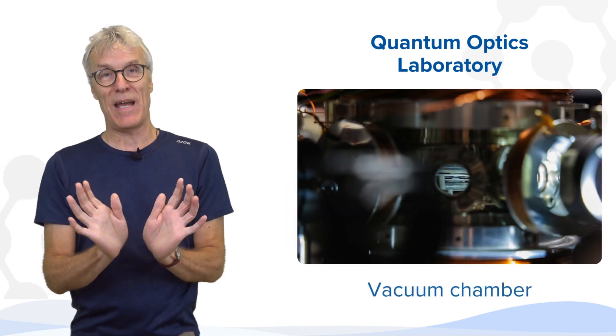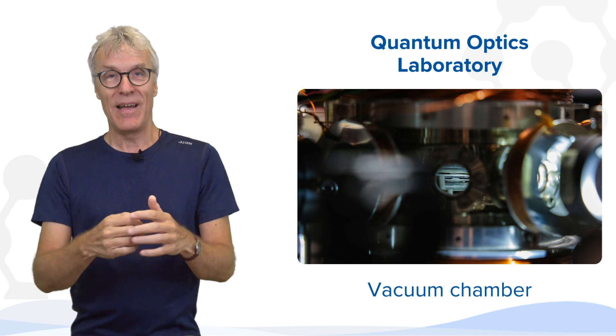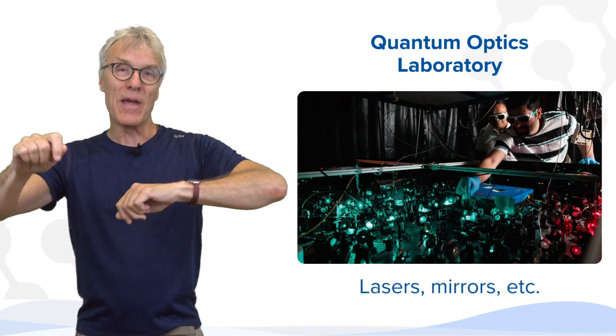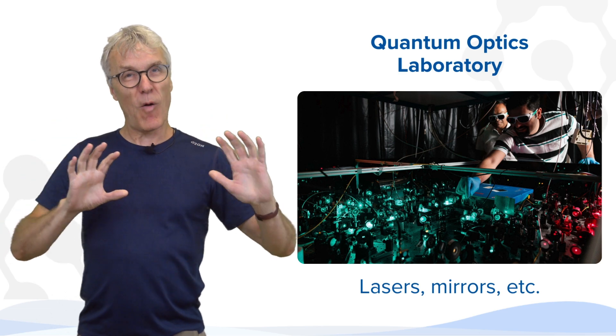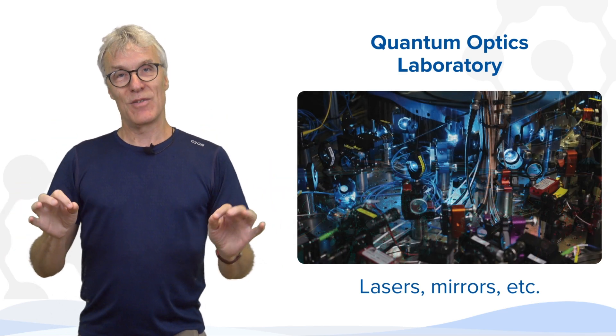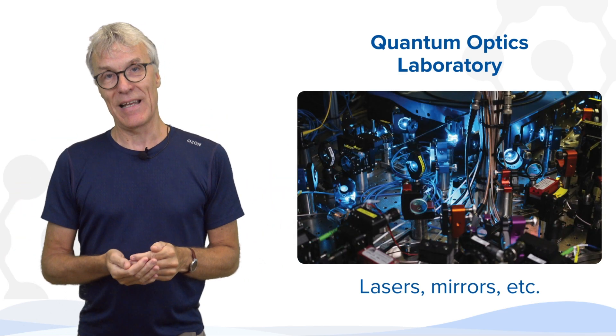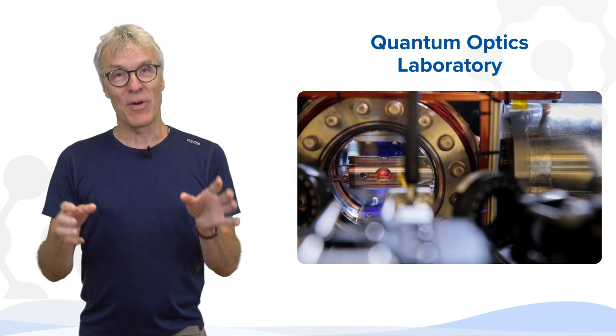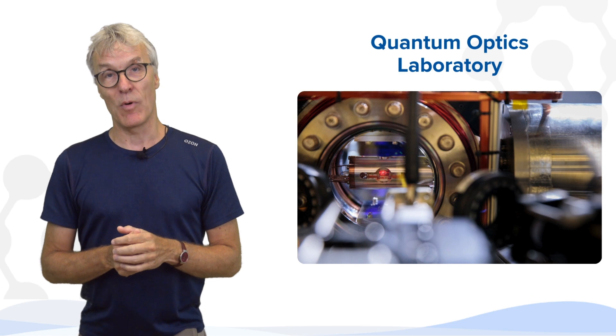But around it, there's a huge vacuum chamber to isolate it from the environment. Outside the vacuum chamber, there's a full table of laser mirrors and stuff that are providing all these different instruments we need to very delicately manipulate the single atom. So it's not necessarily small experiments we are talking about, but what is inside these experiments is very small.